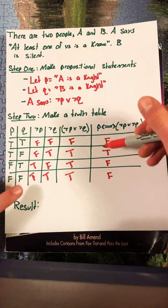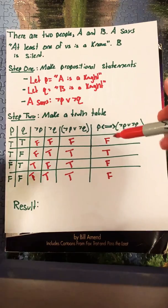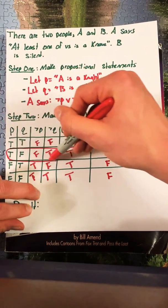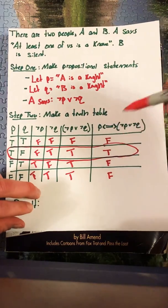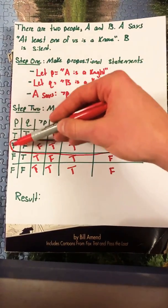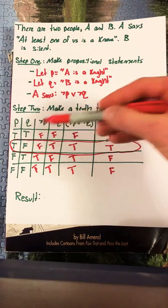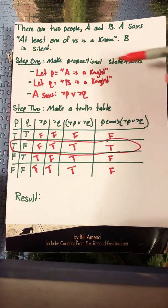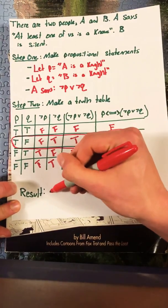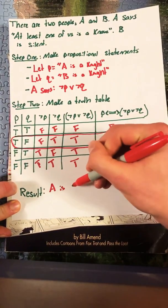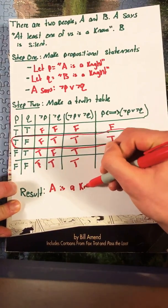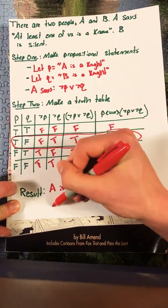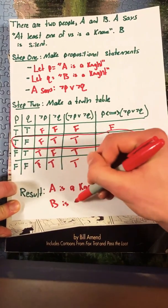You'll notice there's actually only one row that is true for the biconditional statement. And that is this row here. In this row we see that P is true and Q is false. We can go back up to the statements we said above. If P is true this means A is a knight. And if Q is false this means that B is a knave.